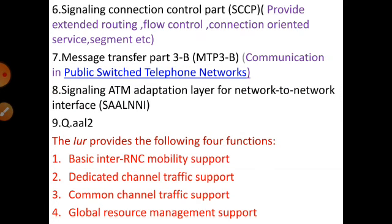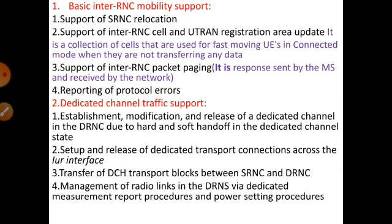The first function is basic inter-RNC mobility support — supporting the relocation of SRNC, that is when one radio network component is relocated or changed over to another radio network component. The second function supports inter-RNC cell and UTRAN registration area update. Inter-RNC cell means making inter-communication within a particular radio network component. Registration area is a collection of cells used for fast movement of user equipment.